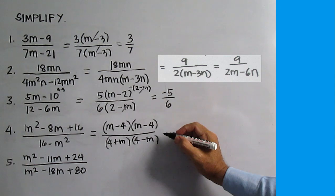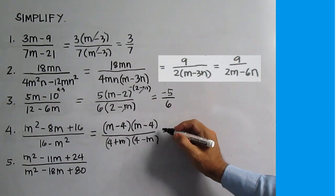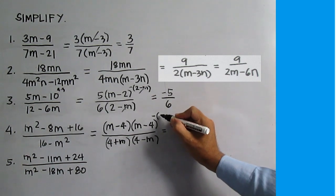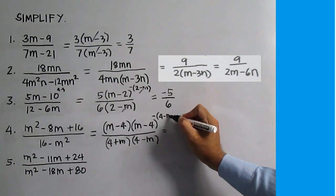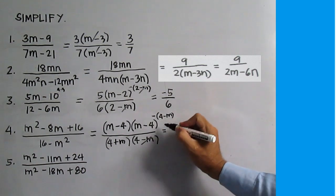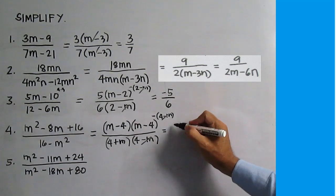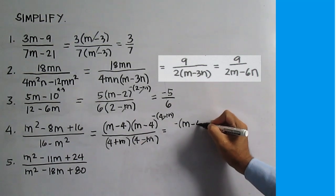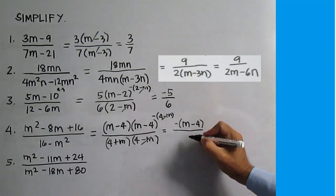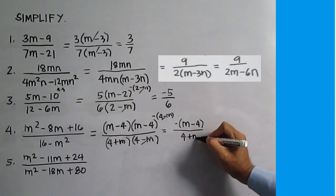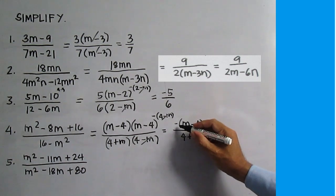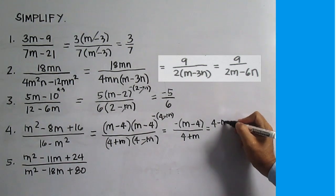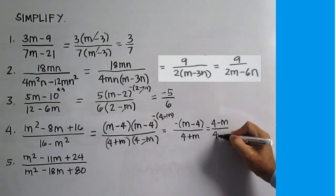M minus 4 is just the opposite of 4 minus M, so we write minus the quantity 4 minus M. Divide out 4 minus M. This is equal to the opposite of M minus 4 over 4 plus M, which is also equal to 4 minus M over 4 plus M.